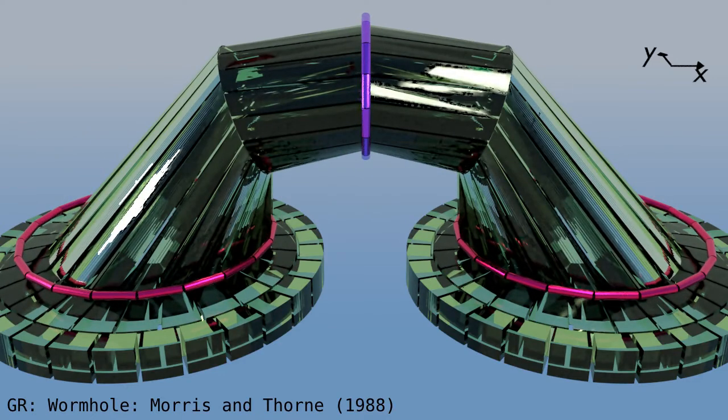And there, we have a wormhole with two mouths and a throat. Note that we cannot do this with deformations within normal space as we usually do.